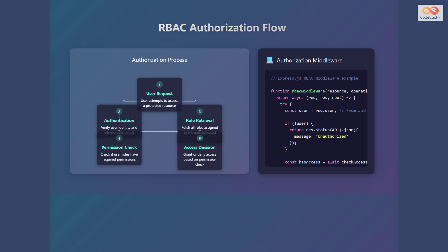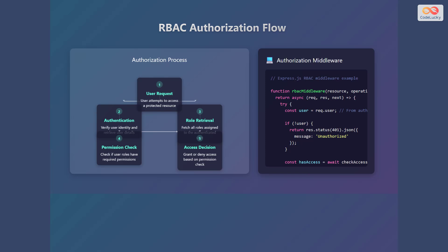Let's see the RBAC authorization flow — the process that determines whether a user can access a particular resource. The user attempts to access a protected resource, initiating the process. Authentication verifies the user's identity and retrieves their details. Role retrieval fetches all roles assigned to the authenticated user. The permission check verifies if the user's roles have the necessary permissions for the requested resource. Finally, the access decision grants or denies access based on the outcome of the permission check.